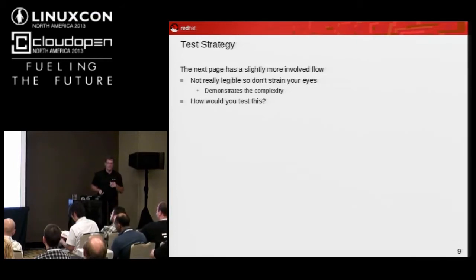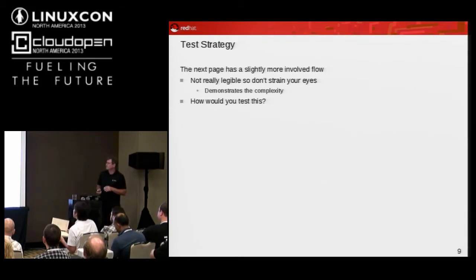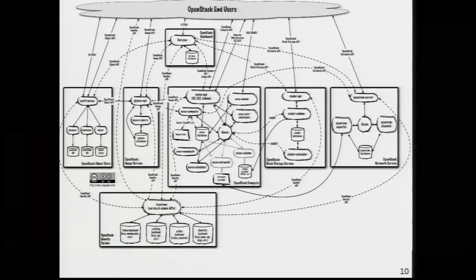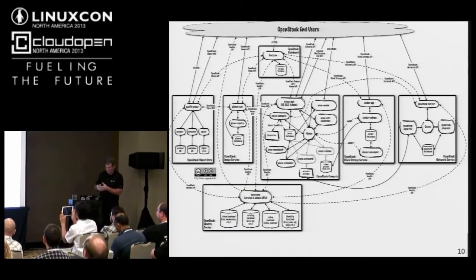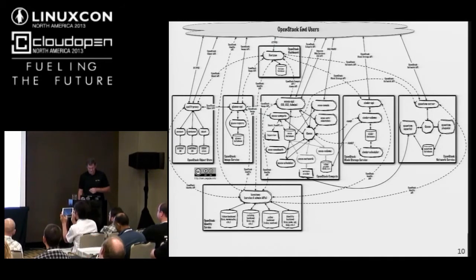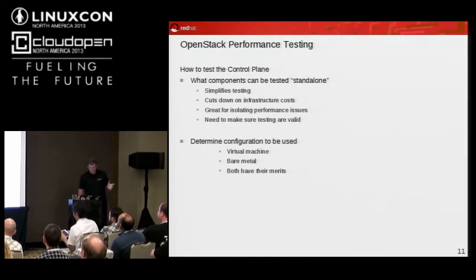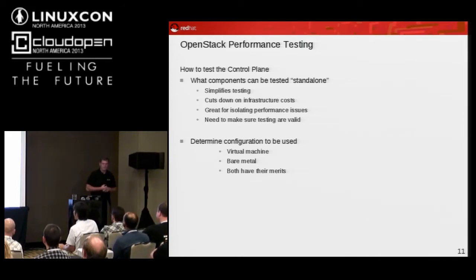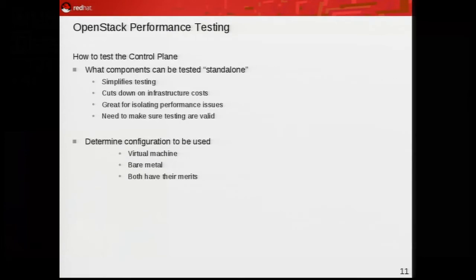The next page shows a little more detailed flow — within each of the major components you have all these other things that talk to each other. This is part of the challenge for us in how we're going to test this. So you take a deep breath and get into how to test the control plane. You look at what can be tested standalone — we can take and stand up a Keystone instance and hit it with API calls. We don't need to hit Horizon and say go start six Nova instances. So we can limit the scale of your test environment by doing things like these.